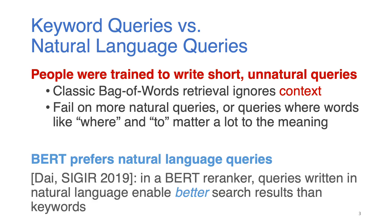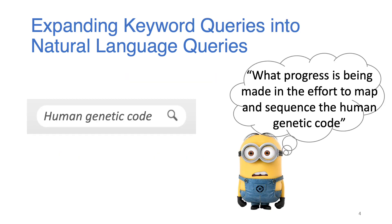Historically, people were trained to write short, unnatural queries that we have seen in the search bar, because classic search engines rely on bag-of-words retrieval, which ignores the context in the sentence. These types of retrieval models will fail on natural queries, or queries where words like 'where' and 'to' matter a lot to the meaning. But recently, we have seen a different trend. Researchers found that with deep language models such as BERT, queries written in natural language now actually perform better than keyword queries. So in this work, we want to expand the keyword queries that people are used to writing back into natural language queries, so that it can improve a state-of-the-art BERT-based re-ranker's accuracy.